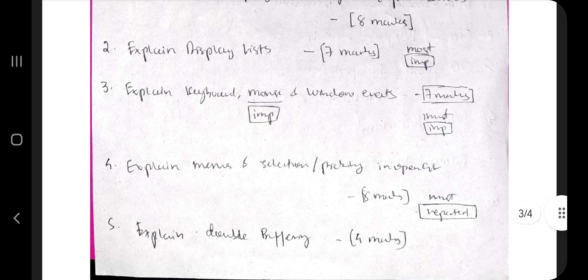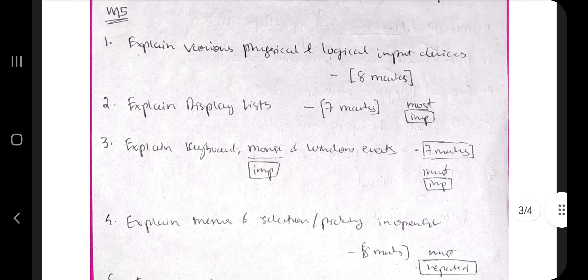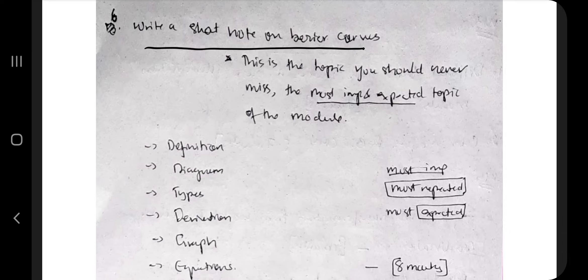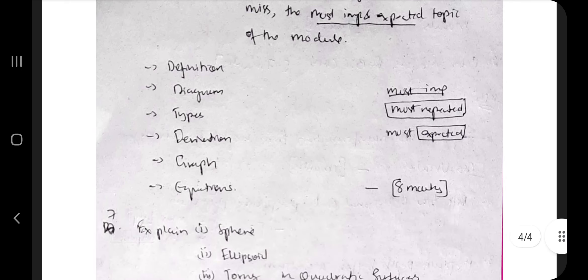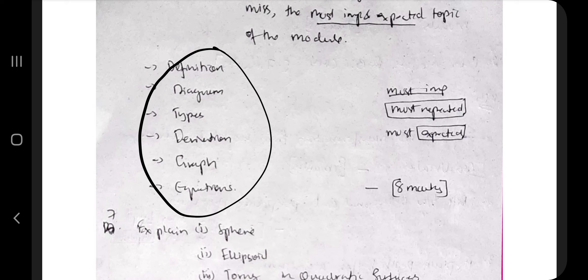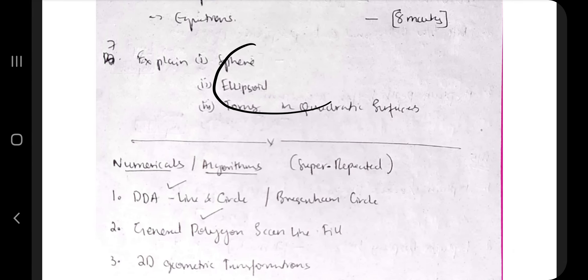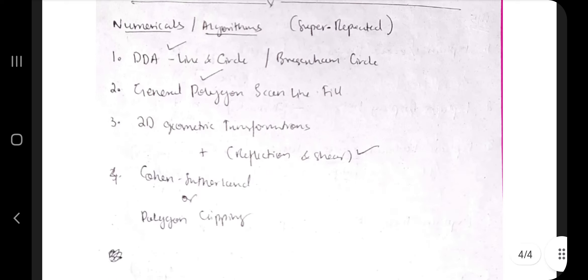In the fifth module, the gem is mouse functions, and sometimes keyboard functions and window events as well. Double buffering, menu and selection, and various physical and logical input devices are equally important — you should not miss any marks in the theory since it is easy to explain in your own words. The gem of this module overall is Bezier curves — the most important, most expected, and most repeated concept from the whole subject. You must know the definition, diagram, types, derivation, graphs, and equations of Bezier curves. Bezier curve applications with diagrams and equations are also useful if you have time.